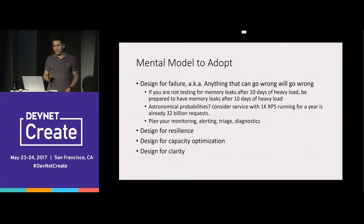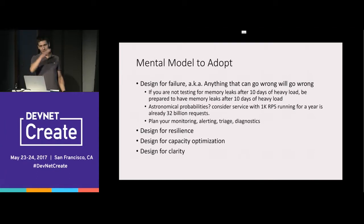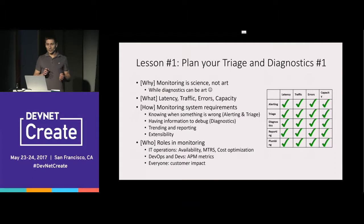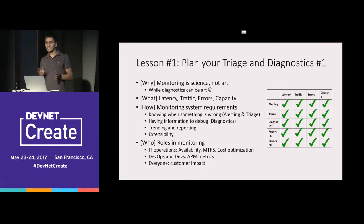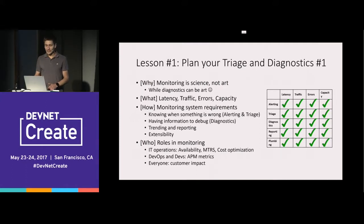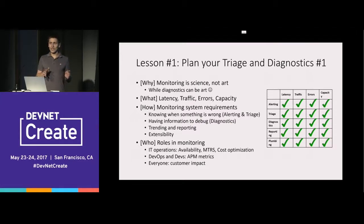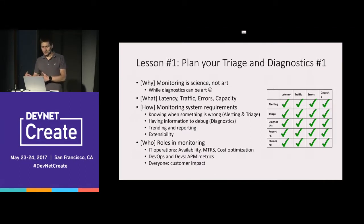The key pillars are: planning and monitoring, design for resilience, design for capacity optimization, and design for clarity. Monitoring is a science, not art. You have to think about what signals you're looking at: latency, traffic, errors, and capacity. For capacity, I mean how close a service is to running at its limits — which determines how you configure auto-scale. Those are your four signal types.